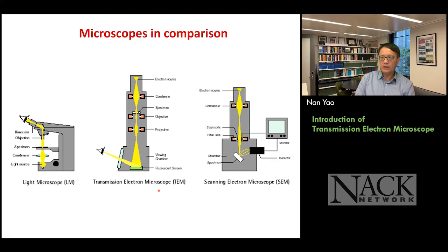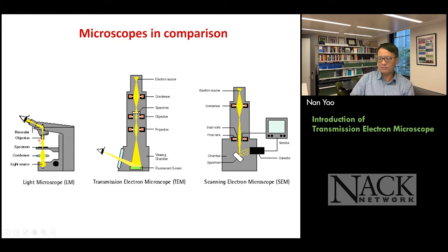Now let's talk about the transmission electron microscope. We always want to connect new things with stuff we already know. What we are familiar with is the optical microscope — on the left of this slide you can see the major components. You have a sample, you have a light source, you have a lens. The lens before the sample, between the sample and the light source, we normally call the condenser lens. Some microscopes have another set of lenses between your sample and your eye, and that's called the objective lens. We use this terminology across all different microscopes — light microscope, ion microscope, x-ray microscope, and electron microscope.